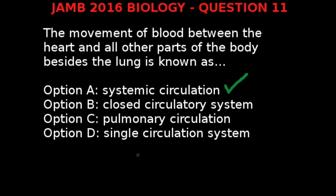So the movement of blood between the heart and all other parts of the body besides the lung is systemic circulation, which is option A.